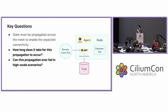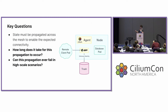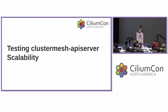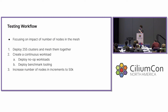This process raises a key question because this state propagation has to occur in order for your connectivity to be enabled. So what happens before that? Before that, you're not going to get that connectivity. For instance, if you have a remote client pod trying to connect to a database in another cluster, that traffic is going to be thrown right in the trash by the data path because it's not going to recognize that workload. Two key questions we wanted to explore: how long does it take for this propagation to occur, and can this propagation ever fail at a high enough scale?